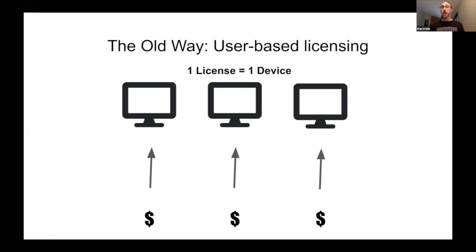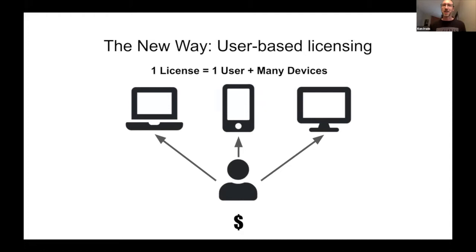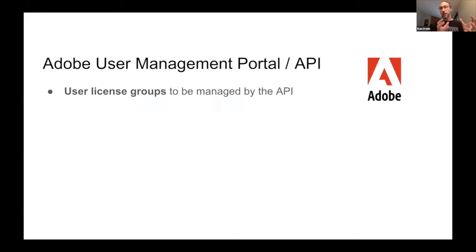The change came from a move from the old world of device-based licensing — one license per device, so if you wanted to use Adobe software you had to go sit down at that device in the computer lab — to the new model of user-based licenses, where you can say Ken has access to the Adobe software for now, something we can grant and revoke more or less at will. We do that through Adobe's user management portal, which has an API that lets us assign and revoke licenses in real time for clusters of student or staff licenses.